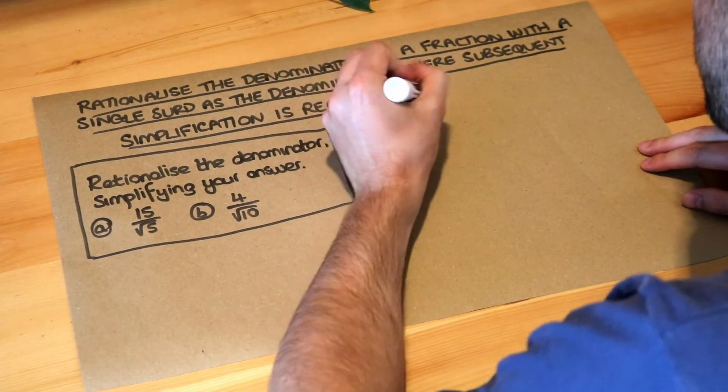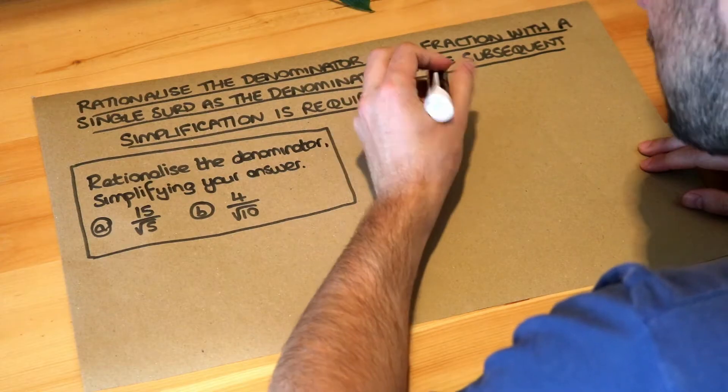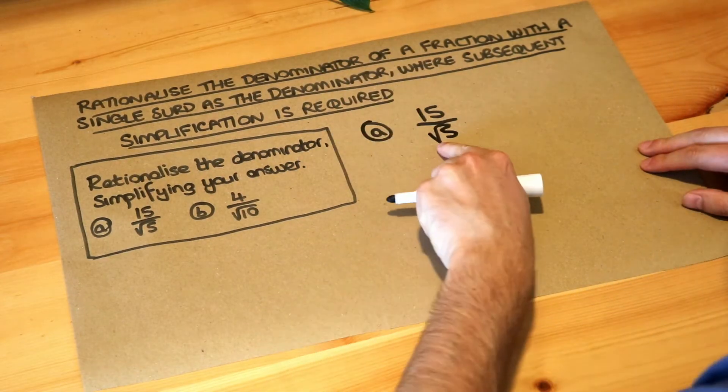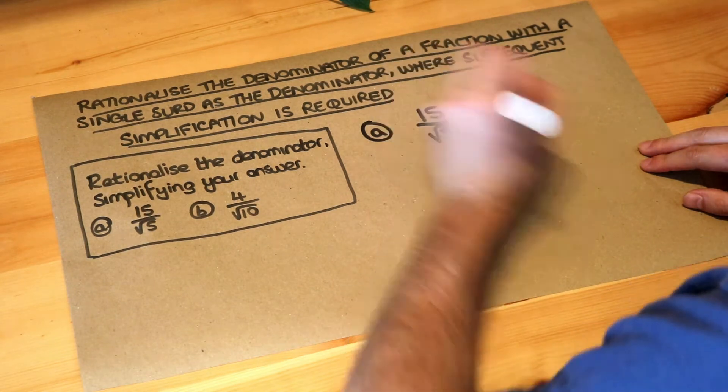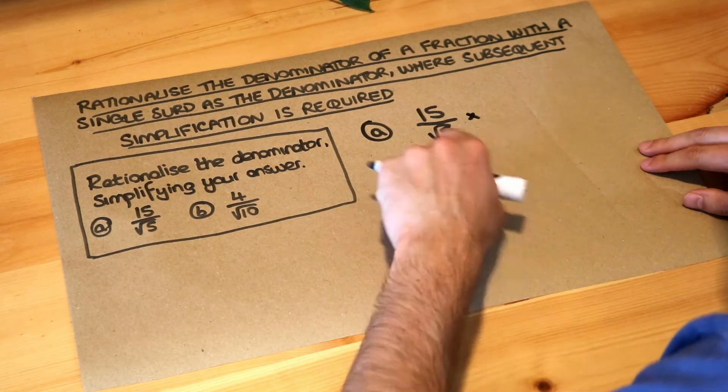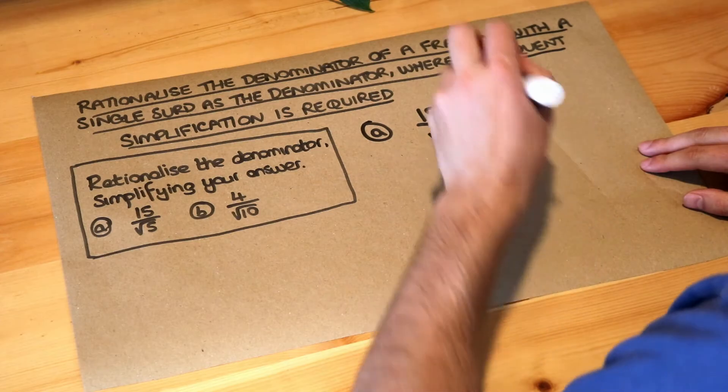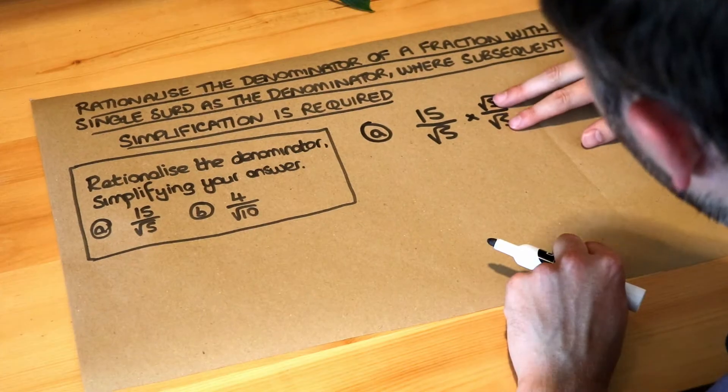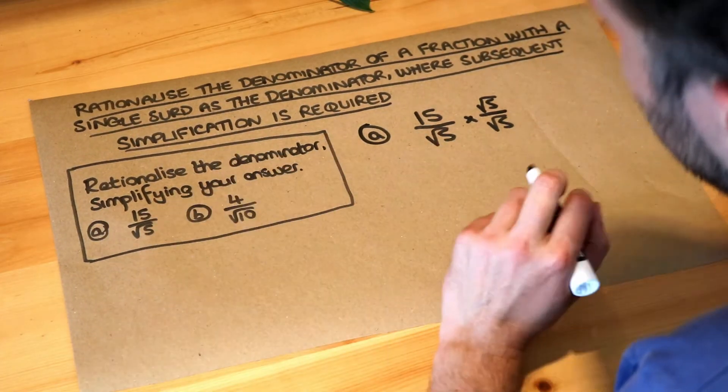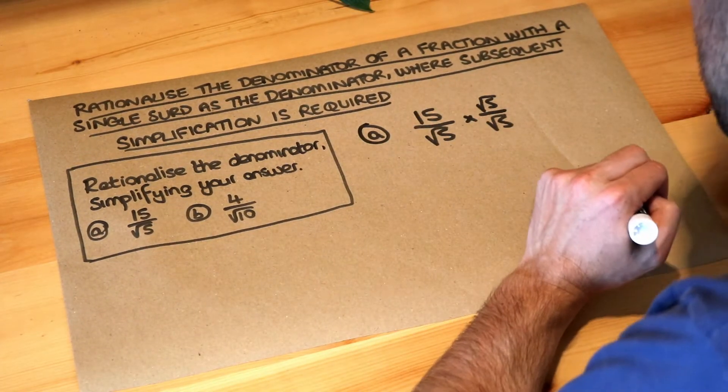Now in a previous video we saw that to rationalize the denominator, to get rid of that surd, the root in the denominator, we have to multiply the top and bottom of the fraction by whatever we have in the denominator. So we times by root 5 over root 5. Because if you think about it, if we times top and bottom of the fraction by the same value, it doesn't make any difference to the fraction, it still has the same value.